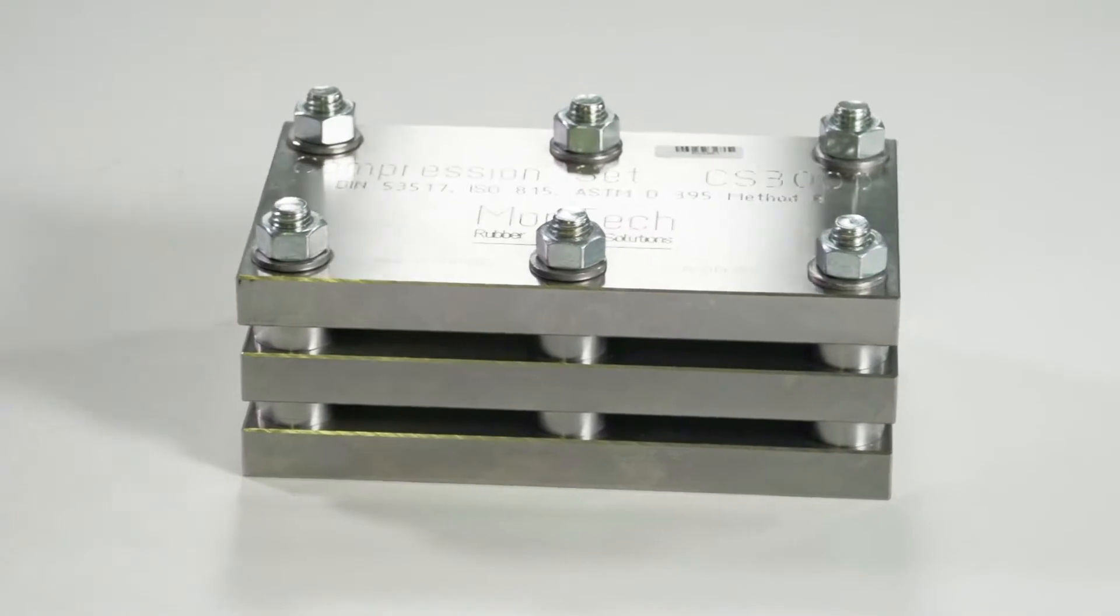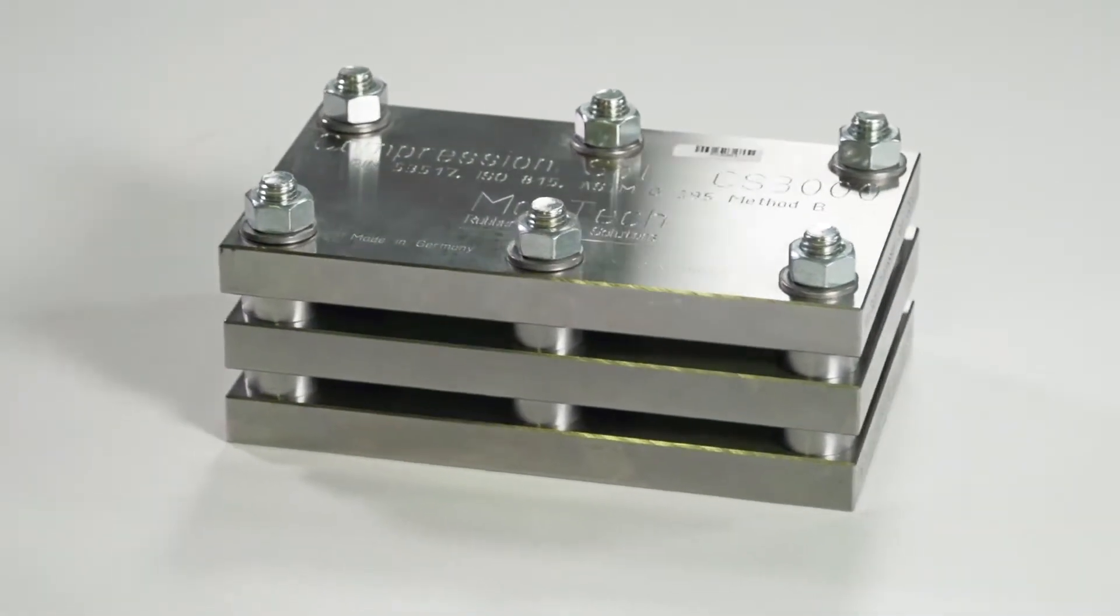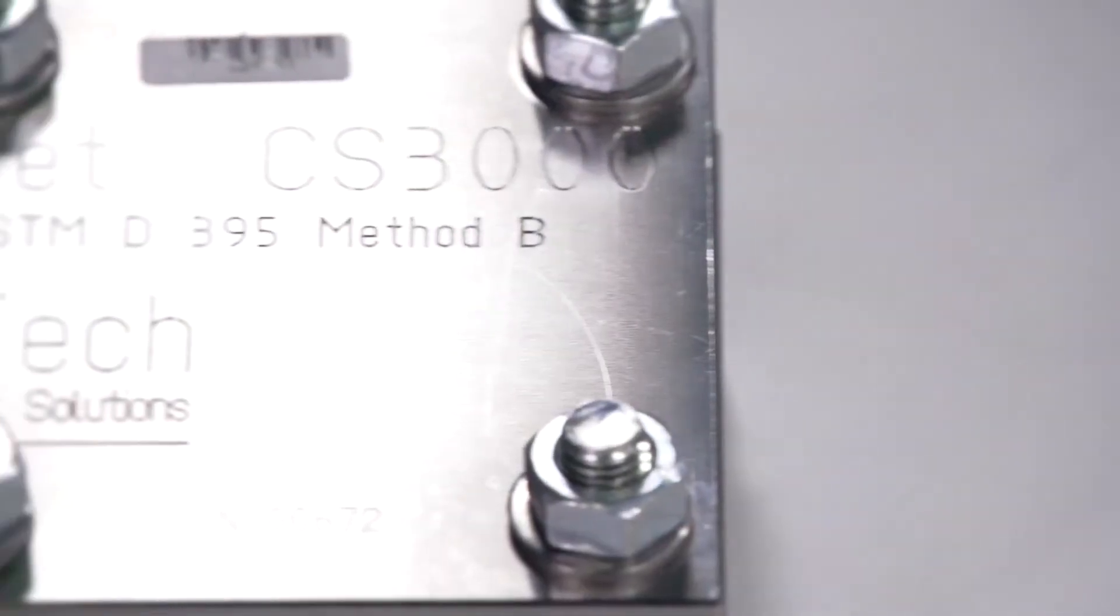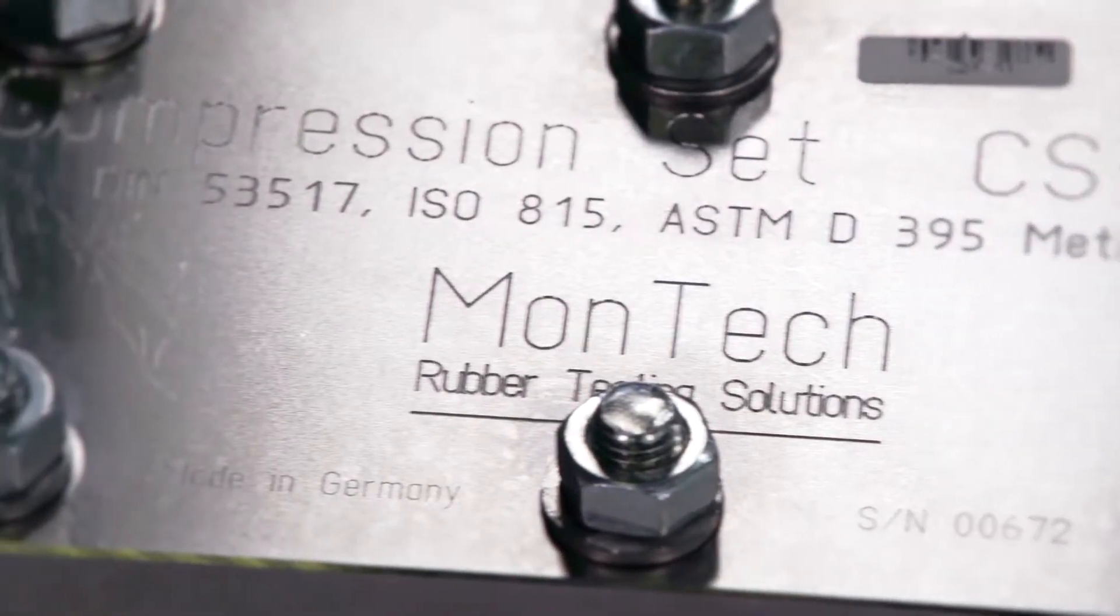Montec's CS3000 Compression Set provides a reliable and repeatable method of testing the effect of compressive stresses on an elastomeric material over a period of time.